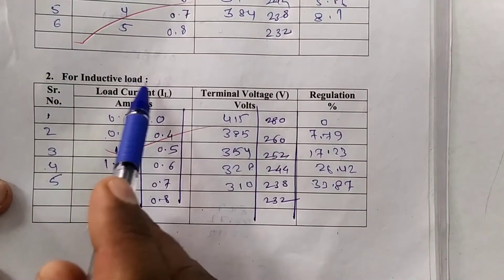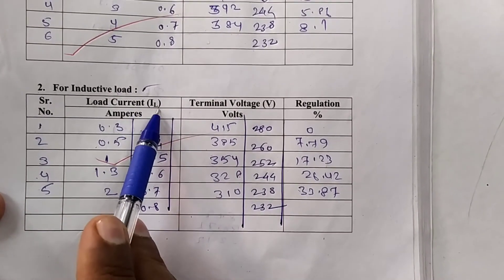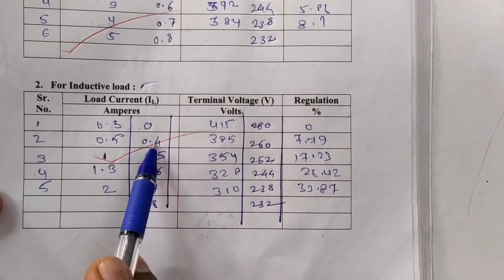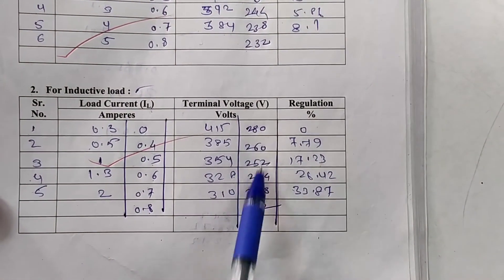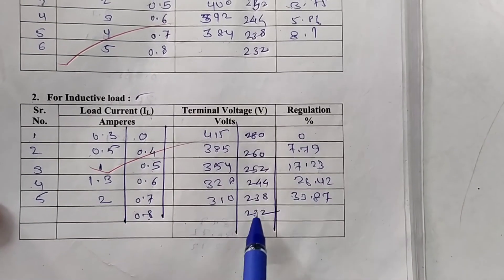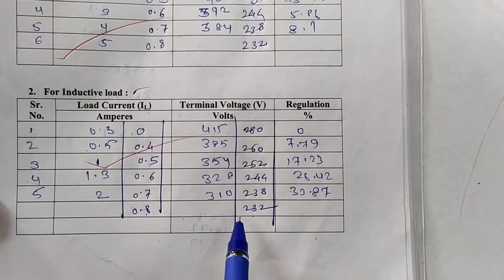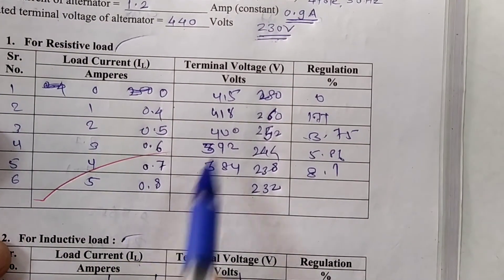Here we are taken inductive load reading. So inductive load current reading right down in this column: 0, 0.4, 0.6 onwards. And accordingly terminal voltage right down here. As the load increases, terminal voltage decreases. Same is repeated for capacitive load and right down the reading in observation table.